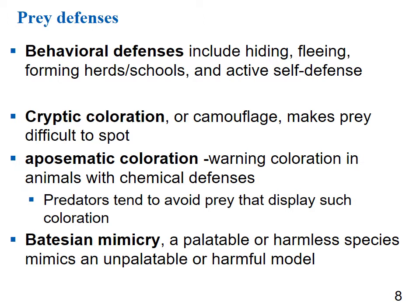A skunk is a good example of aposematic coloration — you stay away from it. Batesian mimicry is when a palatable or harmless species mimics an unpalatable or harmful model organism. With mimicry, organisms didn't get together and plan it — but if you look a certain way and are able to survive and reproduce more than organisms that don't, that trait continues on.